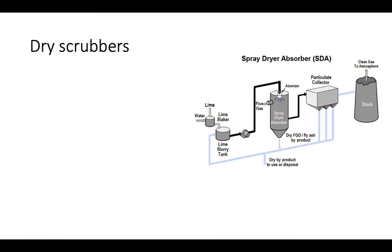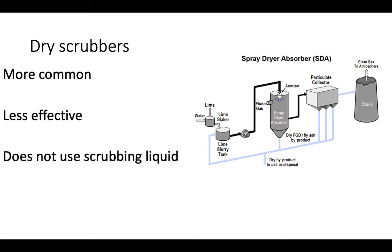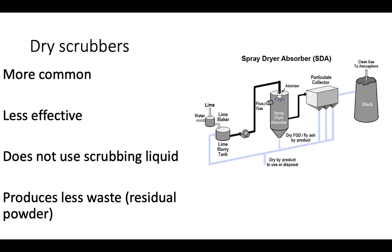Dry scrubbers, on the other hand, are a similar concept but not done through a mist — no liquids are used. They're much more common. They are less effective, but they produce less waste. Rather than the gas flowing through a mist, it flows through a series of absorbent powders — it could be limestone or something similar.